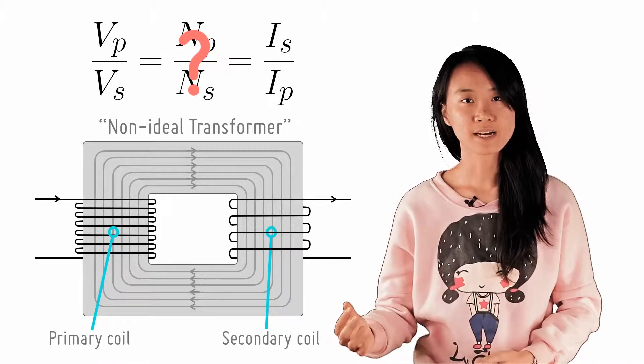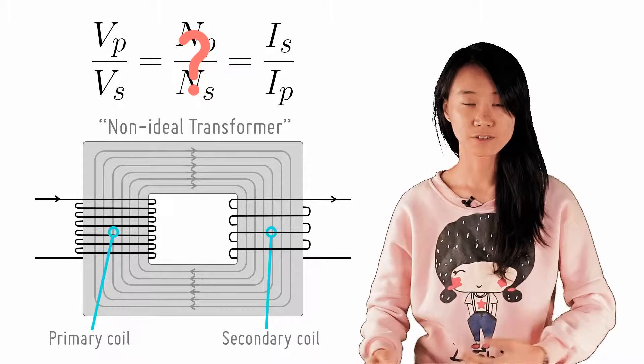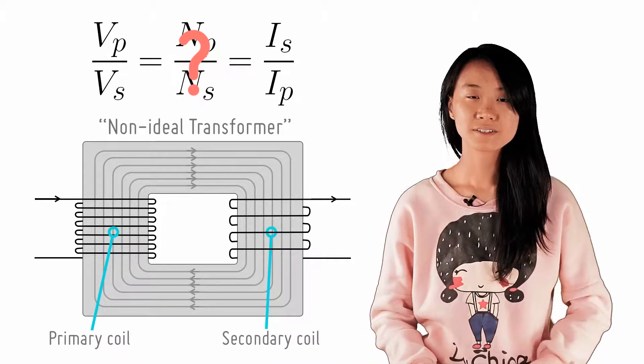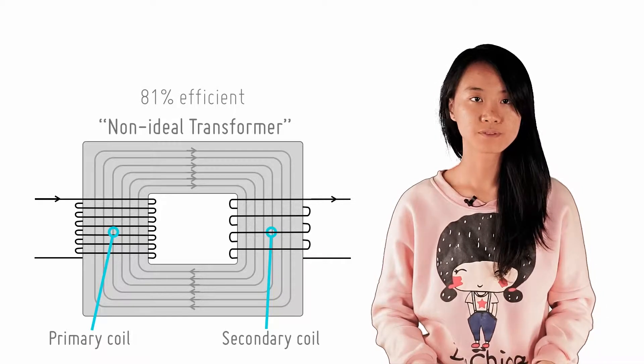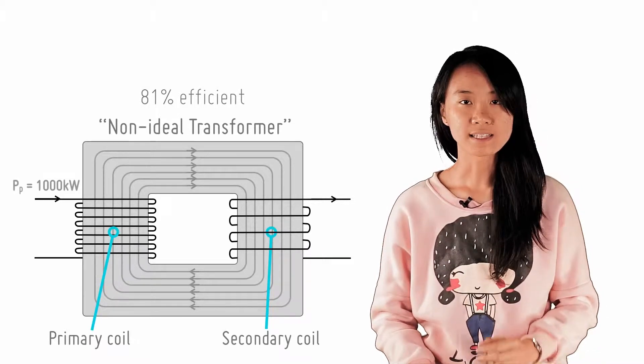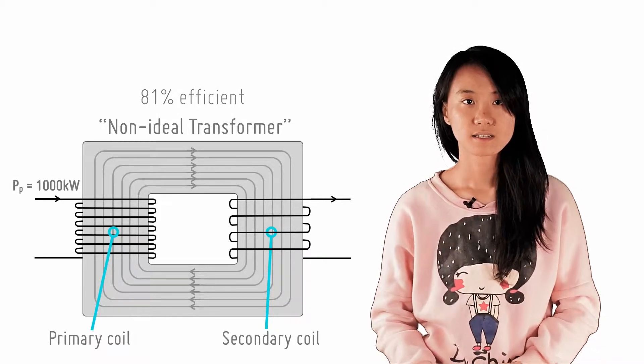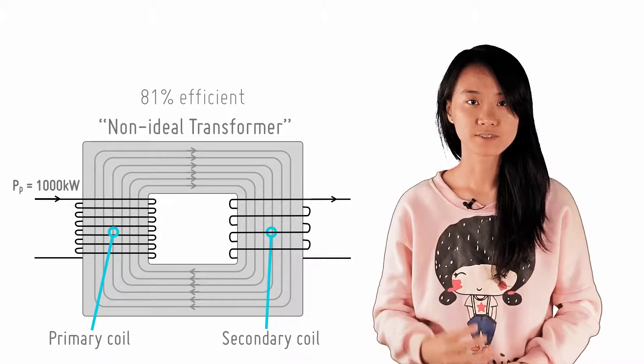Let's say you want to step down the voltage from a power transmission line to your house line for use. Use a transformer that is only 81% efficient, and the power input from the transmission line is 1000 kW. So what is the power output from this transformer?